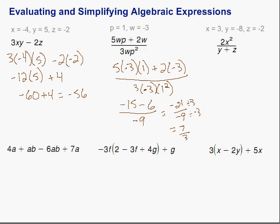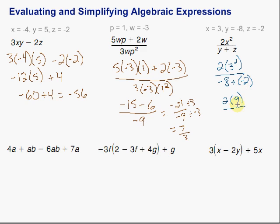Let's take a look at this next one. We have values given for x, y, and z. We'll start by substituting them in: 2 times x squared, x is 3, so 3 squared, all over y is negative 8, plus z, which is negative 2. Order of operations says we do the squaring first — 3 squared is 9. On the bottom, negative 8 plus negative 2 is negative 10. Then 2 times 9 on top is 18, over negative 10. We can simplify by dividing by 2 on the top and bottom, leaving us with 9 over negative 5.